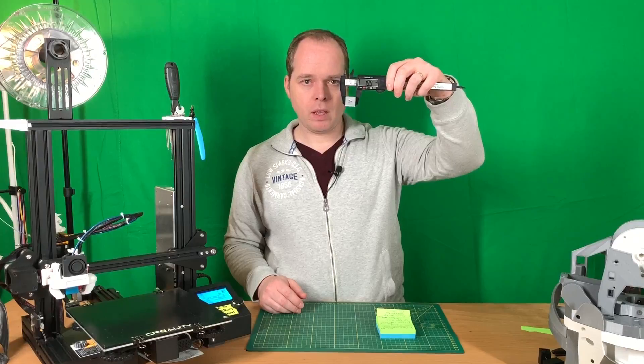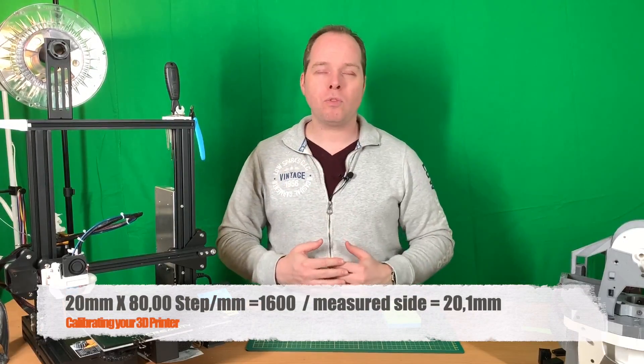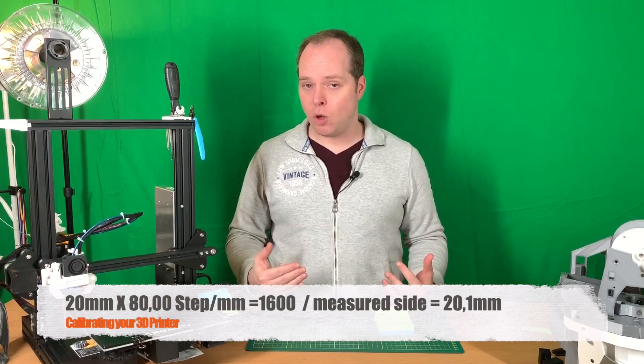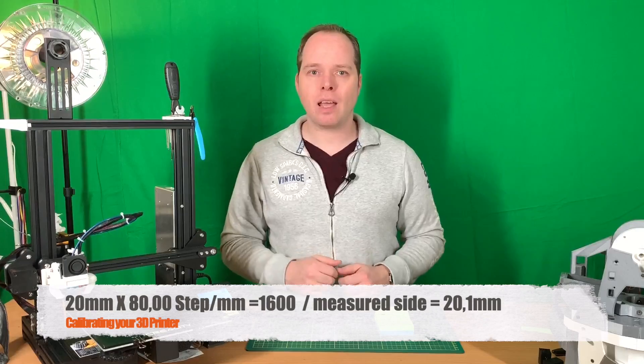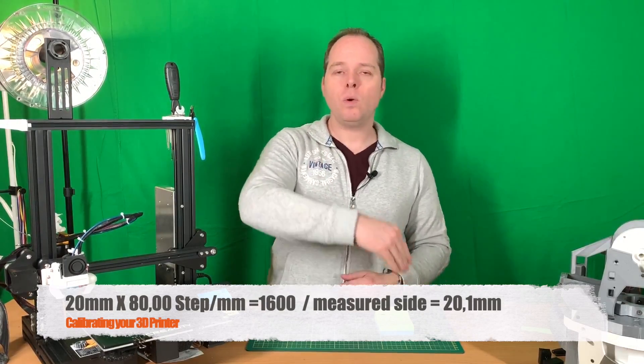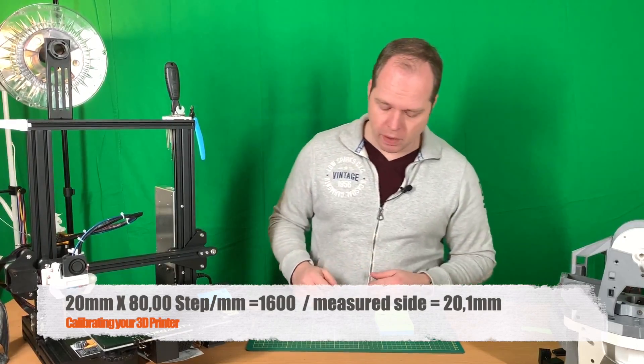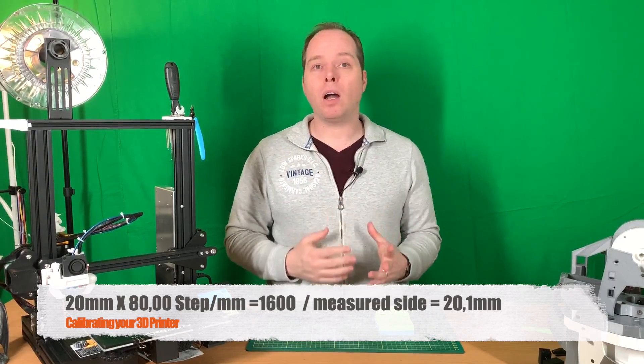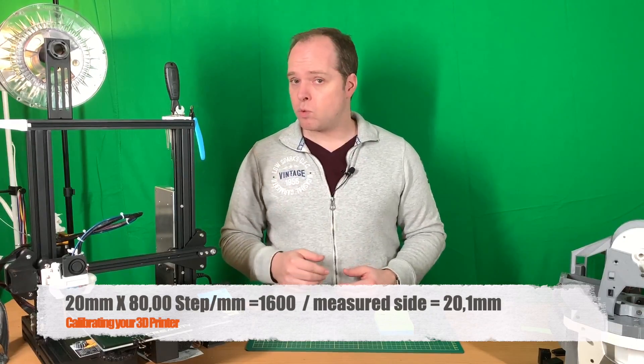Let's measure the Z-axis. So in the height I have 19.9, so a little note. Then you write the formula down: 20 from the 20 millimeter cube times the current step—in this case it's 80—and then we are going to divide it by the measured side of this calibration cube. Well, for the X-axis it was 20.1, in the Y-axis it was also 20.1, and in the Z-axis, the last measure, it was 19.9.